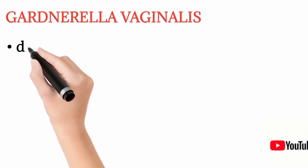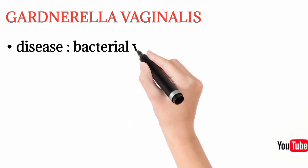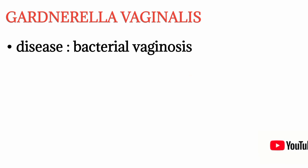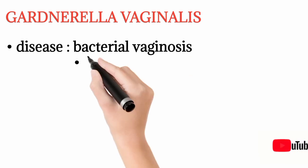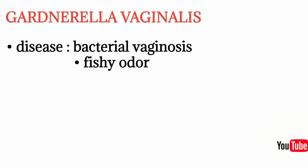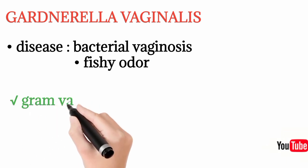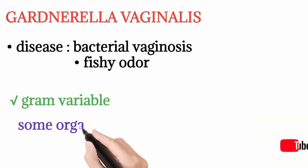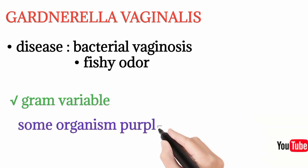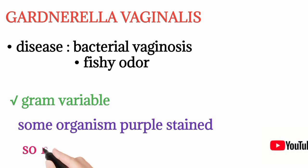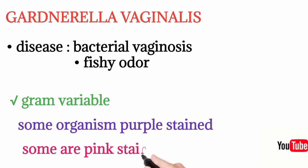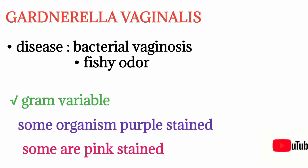Gardnerella vaginalis causes bacterial vaginosis, associated with a typical fishy, pungent-smelling odor from vaginal discharge. An important property is that Gardnerella vaginalis is gram-variable, meaning some organisms stain purple and others stain pink on gram staining.